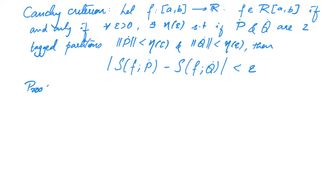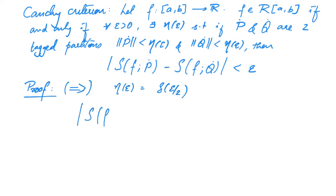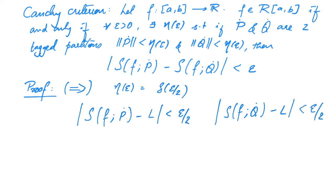Let's now turn to its proof. One direction of this theorem is very easy: if f is Riemann integrable then we can find such an eta of epsilon. In particular, eta of epsilon is nothing but delta of epsilon divided by two. So if norm of P-dot and norm of Q-dot are less than delta of epsilon by two, then |S(f, P-dot) − L| is less than epsilon by two, and |S(f, Q-dot) − L| is less than epsilon by two.